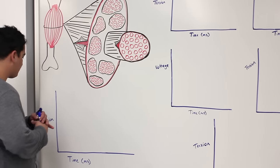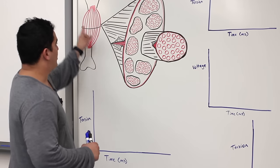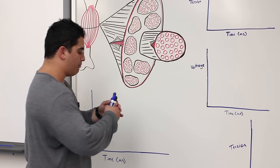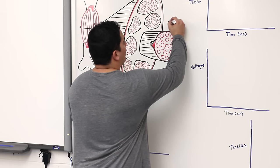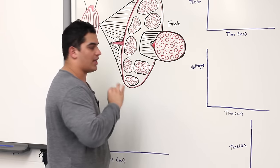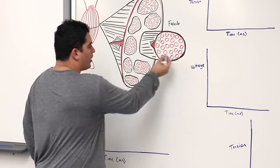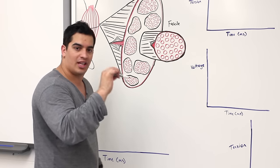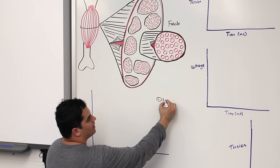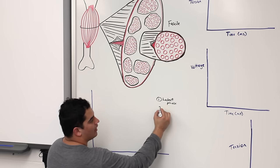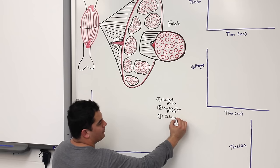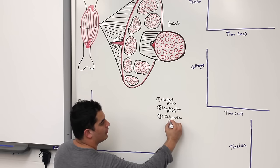Looking at a muscle fiber, recall that a fascicle is surrounded by perimysium and consists of bundles of muscle fibers wrapped by endomysium. A muscle twitch has three phases: the latent phase, the contraction phase, and the relaxation phase.